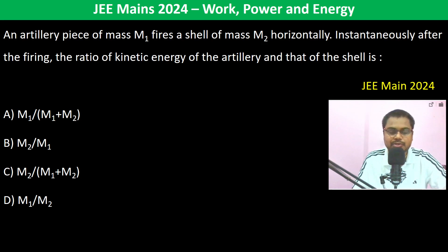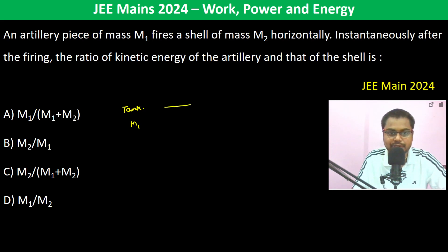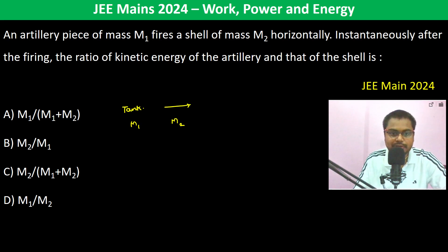An artillery piece of M1 — this is a tank of mass M1. It fires a shell of mass M2 horizontally. Instantaneously after firing, we need to find the ratio of the kinetic energy of the artillery to that of the shell.